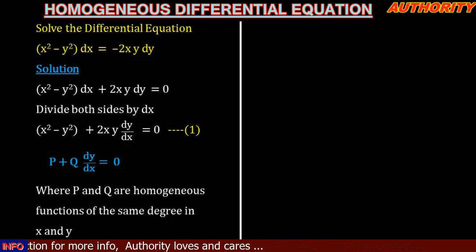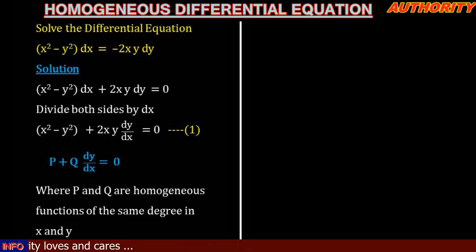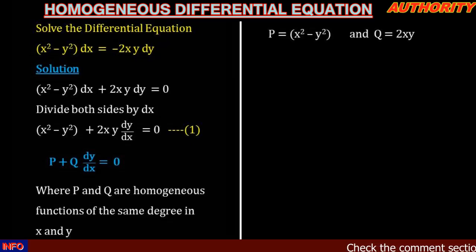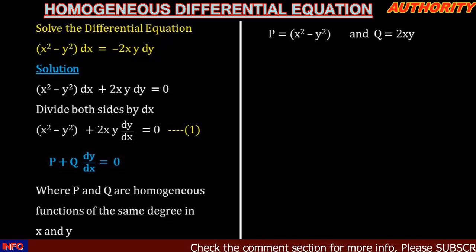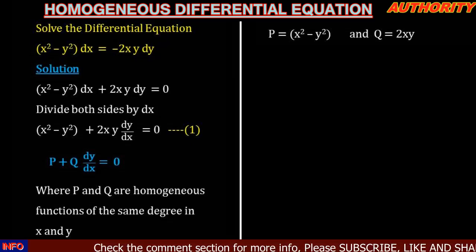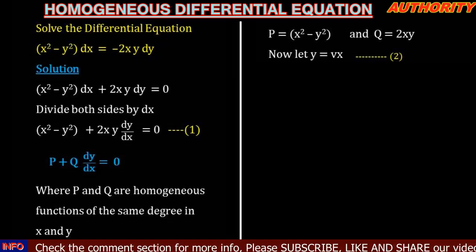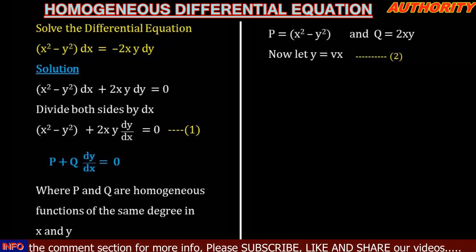Since equation 1 is homogeneous and is in the form P plus Q dy/dx equal to zero, we identify that P is equal to x squared minus y squared, and Q is equal to 2xy. Now we are going to use the substitution: let y equal to vx.